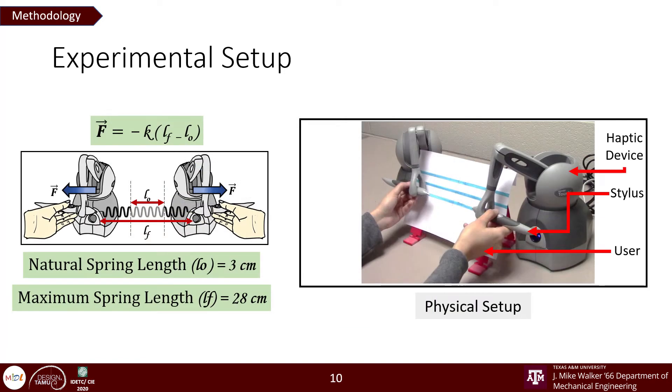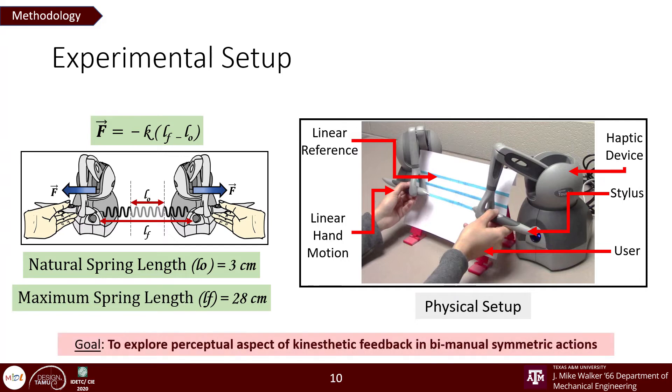In our physical setup, we added a visual reference to maintain as linear as possible stretching of the string. We found through our pilot studies that people found it easier to maintain a linear motion when provided with a visual reference. We designed three lines of 28 cm each at different heights to serve different user anatomies as observed during the pilot trials. Secondly, the pose in which a person holds the styli is designed to minimize the torque that could have been experienced if the styli were held at an angle to longitudinal axis of the virtual string. Our goal in this experiment is to explore the perceptual aspect of kinesthetic feedback in bimanual symmetric actions.